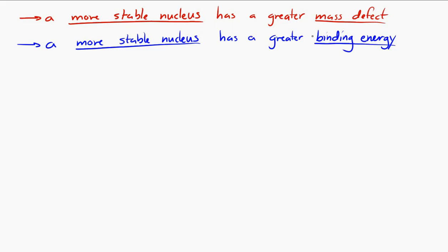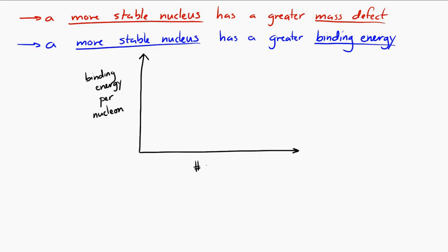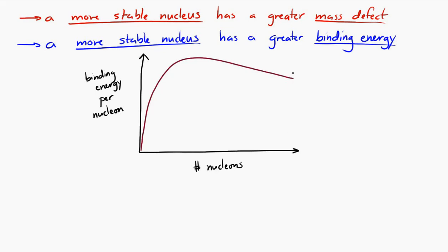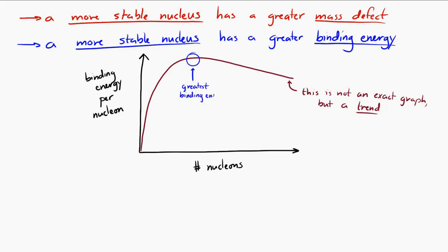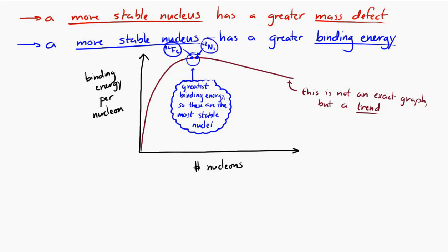A common way to visualize this is to draw a graph of binding energy per nucleon versus the number of nucleons in the nucleus. For stable nuclei, the graph has a characteristic shape — not a simple parabola or exponential, but a curve that peaks in the middle. At the maximum, where binding energy per nucleon is greatest, we find the most stable nuclides. It turns out those are iron-56 and nickel-62. On the edges of the graph, binding energy per nucleon is smaller, indicating less stable nuclides.